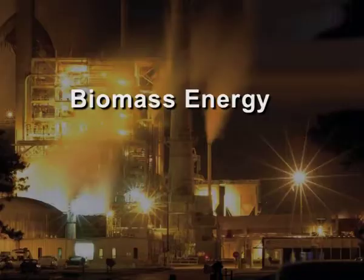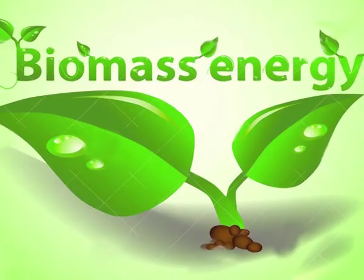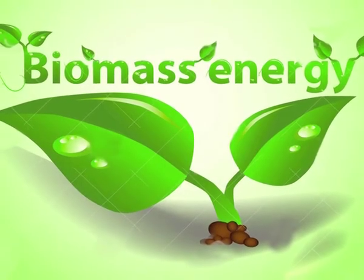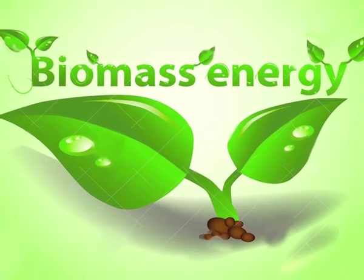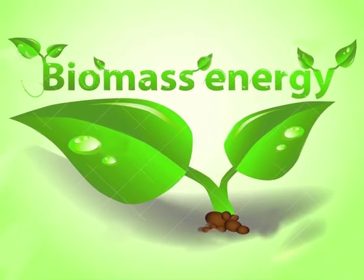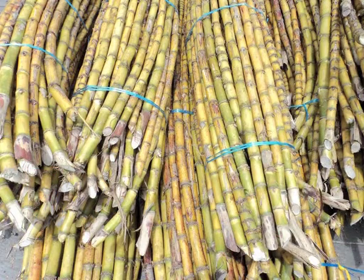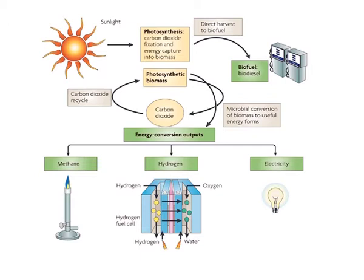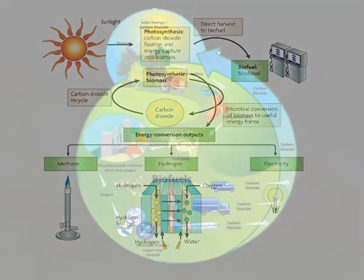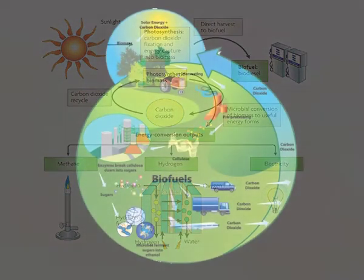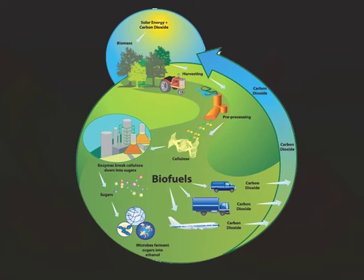The last type of renewable energy source is biomass energy. Biomass is organic material which stores sunlight in the form of chemical energy — for example, wood, wood waste, straw, manure, and sugar cane. By the process of photosynthesis, solar energy can be converted into biomass, which in turn can be stored and used as fuel in various forms. There are many ways to use this biomass.